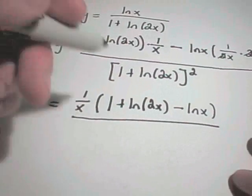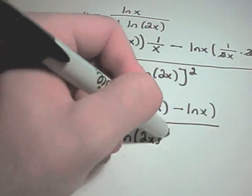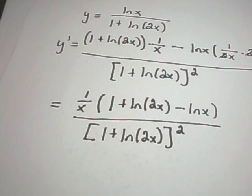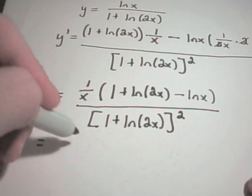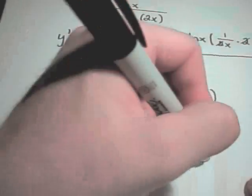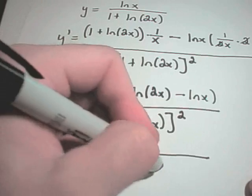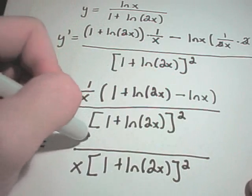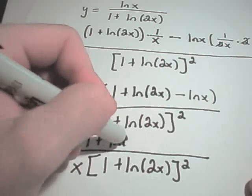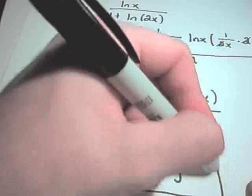That's all over the denominator, 1 plus ln of 2x quantity squared. Unless I have a good reason for multiplying out something like in the denominator, I would leave it alone. You could simply kick this x to the bottom of the fraction and have x times 1 plus ln of 2x quantity squared. Then you would be left in the numerator with 1 plus ln of 2x minus ln of x being your derivative.